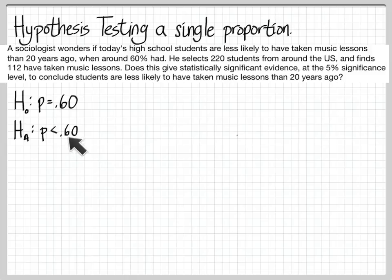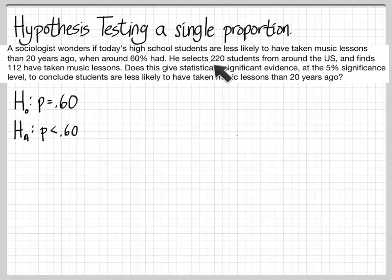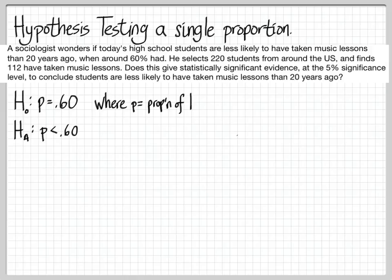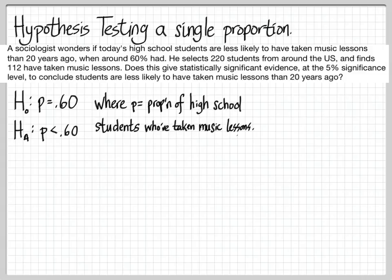We're trying to prove it's less than 60%. These are perfectly good hypotheses to write for tests: p equals 0.60, p less than 0.60. Notice these are not p-hats. We don't write hypotheses about the sample values — we know the sample value; the p-hat is 112 out of 220. This is about the population. But you can't just write this. You have to say what this letter p represents in the context of the problem, something like: p is the proportion of high school students who've taken music lessons. That way you are making it clear to the reader what this p represents.